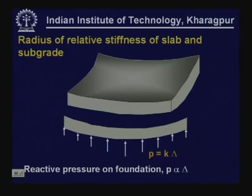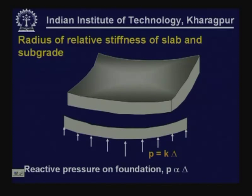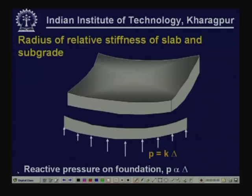The assumption using which the radius of relative stiffness is adopted is: when the slab deflects, the pressure produced at different locations is proportional to the deflection at that location. So the reactive pressure is proportional to the deflection, and K is the proportionality constant — the modulus of subgrade reaction. The radius of relative stiffness of slab and subgrade is given by comparing the stiffness term of the slab and a similar term for the foundation. The stiffness term for the slab is given as E·h³ divided by 12·(1−μ²), where E is the modulus value of concrete, h is the thickness of the slab, and μ is the Poisson ratio value.